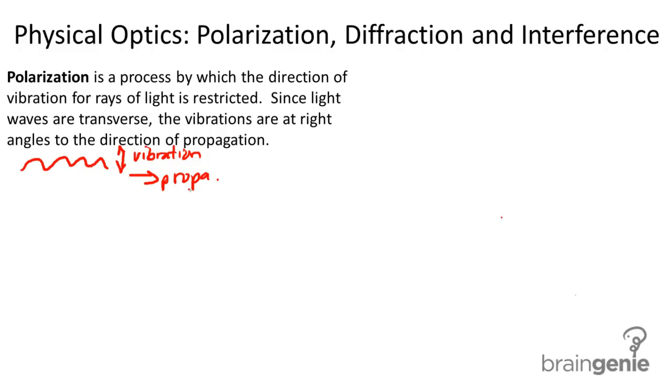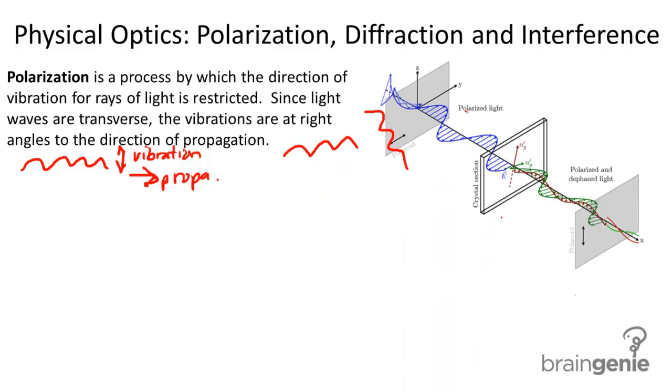If you look at a light source, light sources have many different light waves coming in all different types of directions, and their vibrations are also in different directions. When we talk about polarization, here we see a light source with light rays vibrating in many different directions. We talk about using a material to block out all other directions of light except for one.